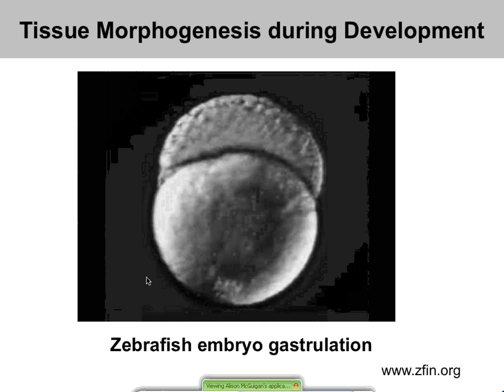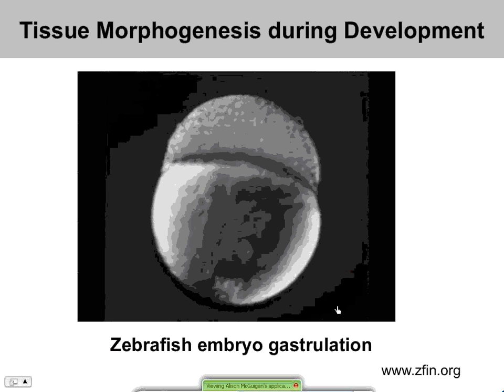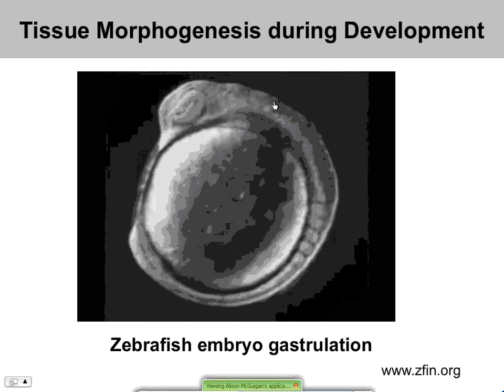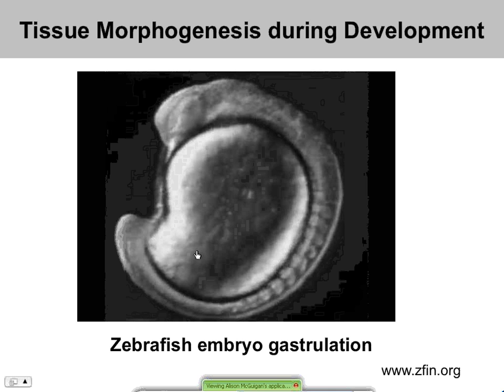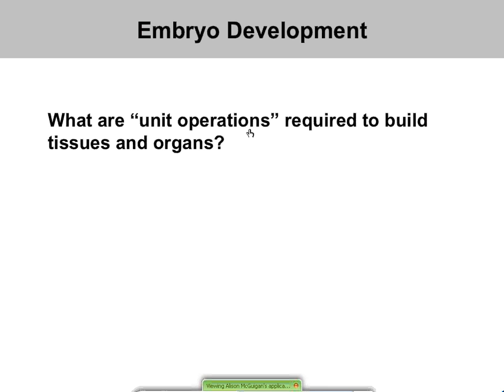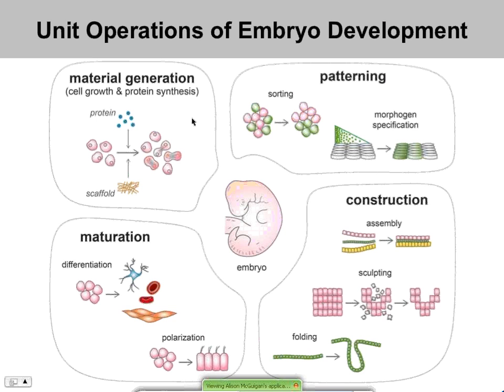Looking at a video of a zebrafish embryo developing, it undergoes a lot of stages. It starts with a very simple ball of cells, forms more complex structures through a series of folds or rolls. There's lots of cell reorganization going on in response to growth factors and stresses — it's a very complicated situation. But if we break it down as engineers and think about what are the unit operations required to build a tissue or an organ, we can really break them down into four operations.